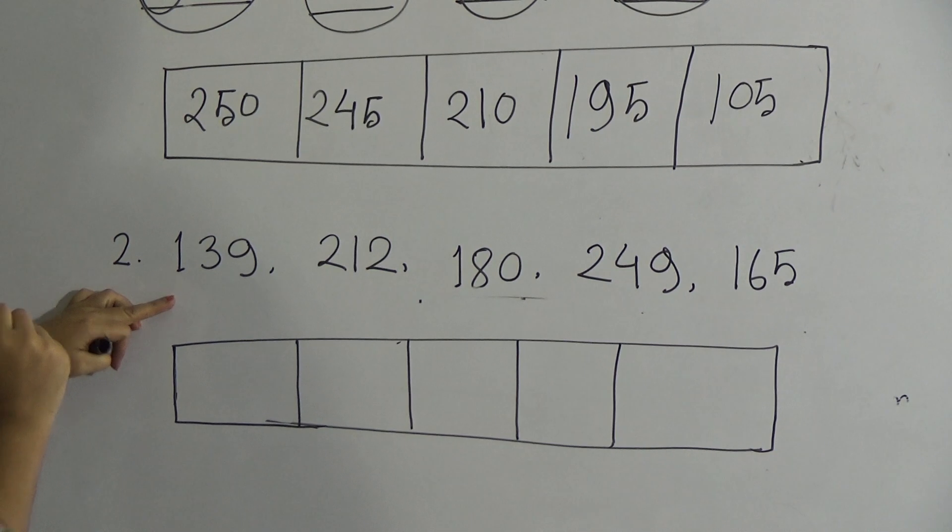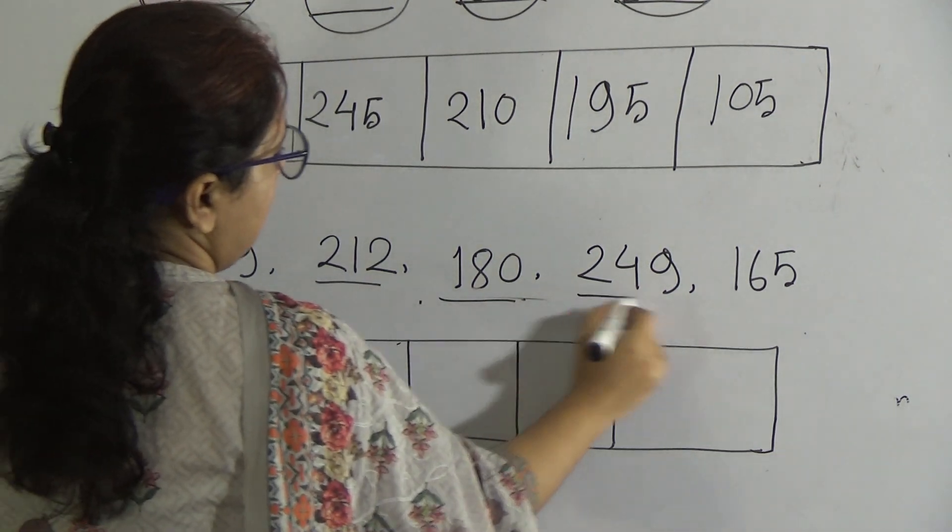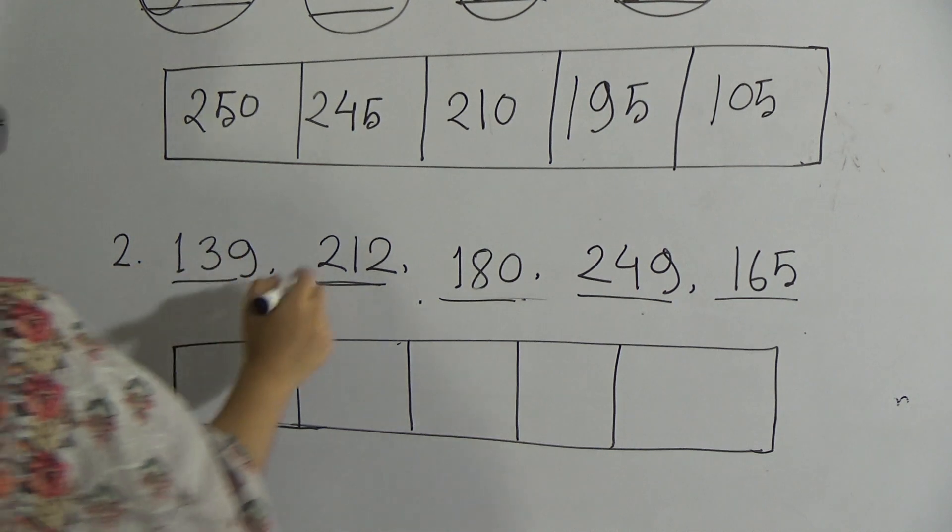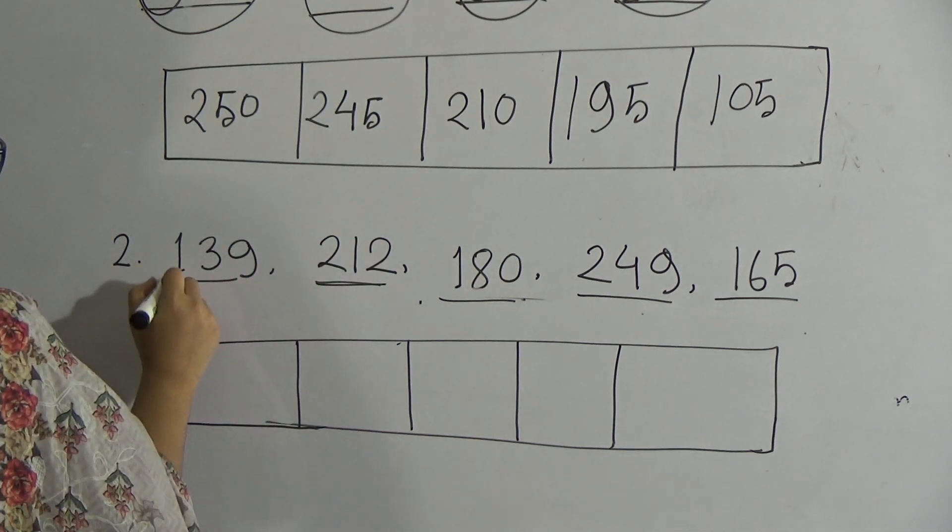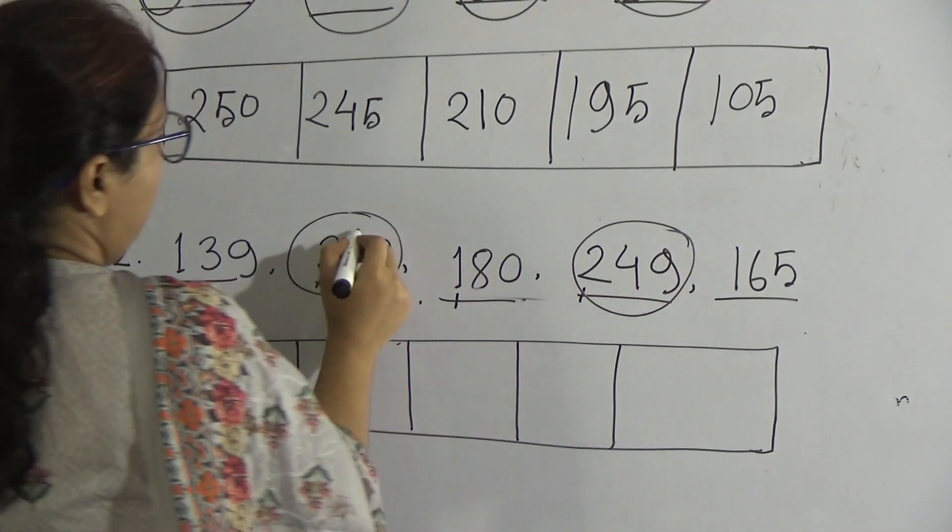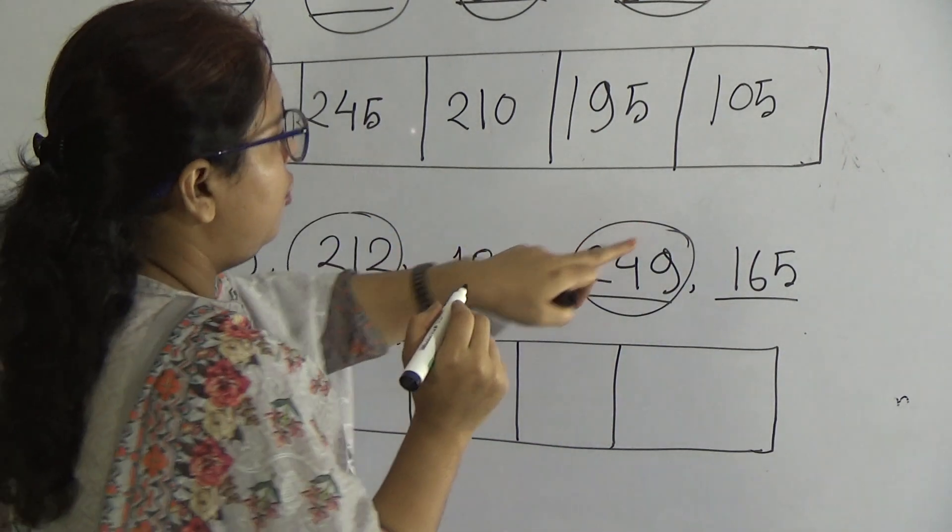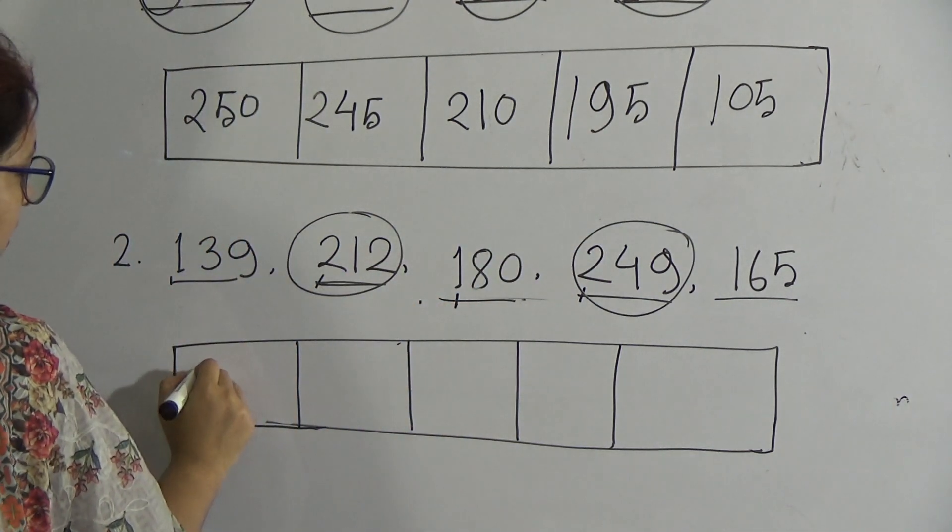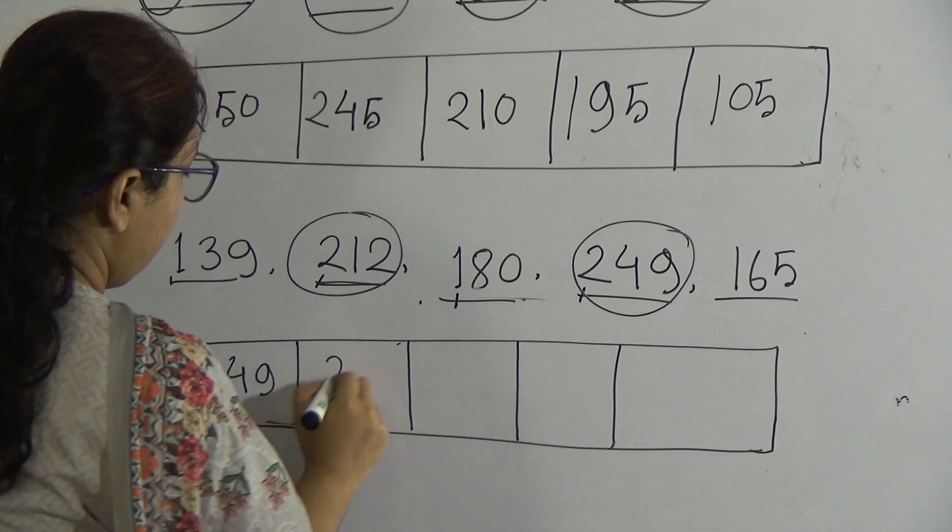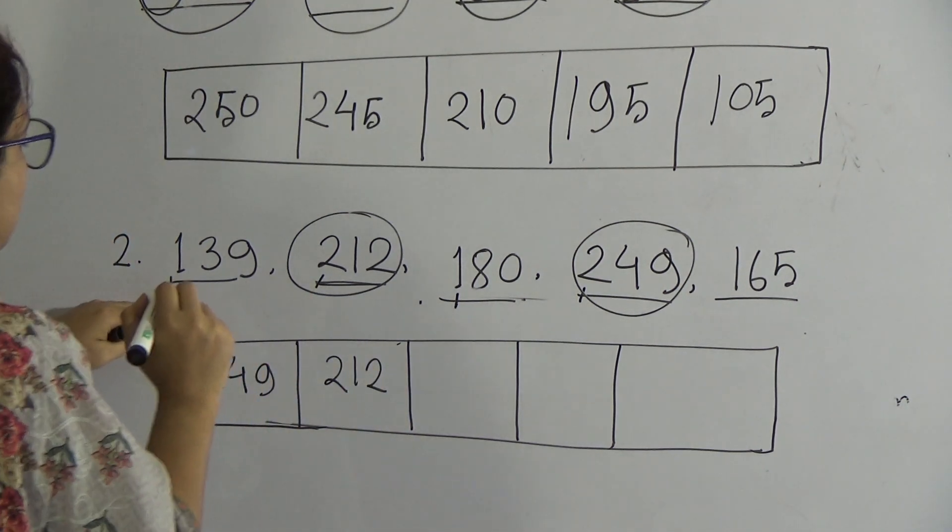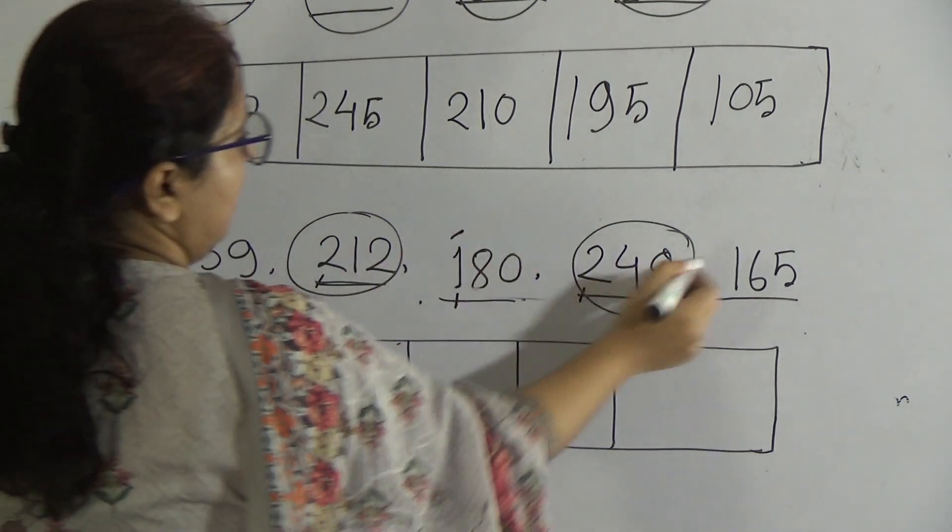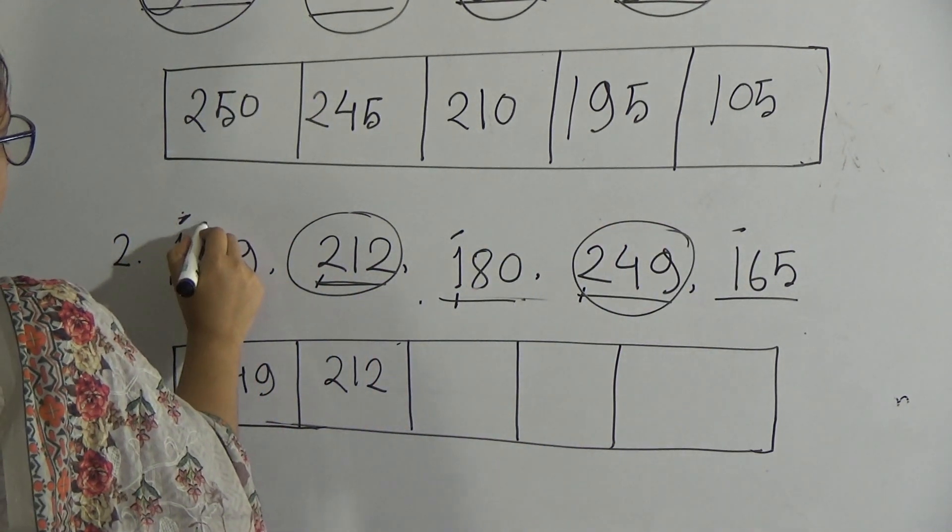Now the next question. Here are five numbers given: 139, 212, 180, 249, and 165. All digits are also three digits. At first look at the first digits: one, two, one, two, and one. So 212 and 249. Now move on to second numbers: one and four. Four is bigger than one, so you write 249 first.